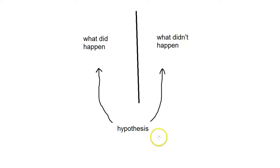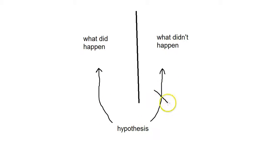If the same hypothesis works as an explanation for everything, then it actually explains nothing. One feature of a good explanation is that it doesn't only explain why what did happen did happen — it also explains why something different didn't happen instead. That would be captured if the hypothesis would fail as an explanation if something different had happened instead.